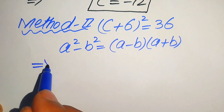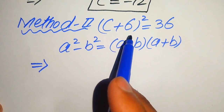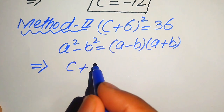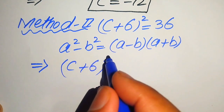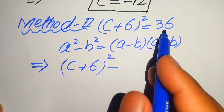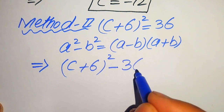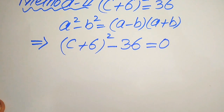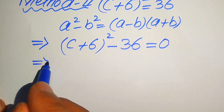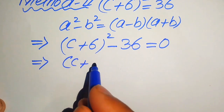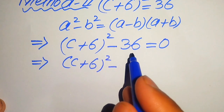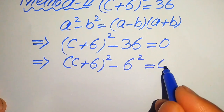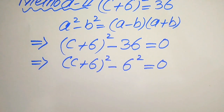To apply this formula we first rearrange the equation. We move 36 to the left hand side, where it becomes minus 36, giving us (c + 6)² − 36 = 0. We then rewrite 36 as 6², so the equation becomes (c + 6)² − 6² = 0.